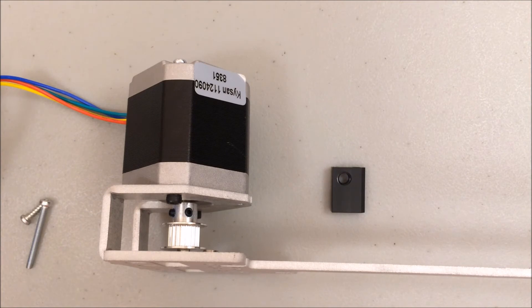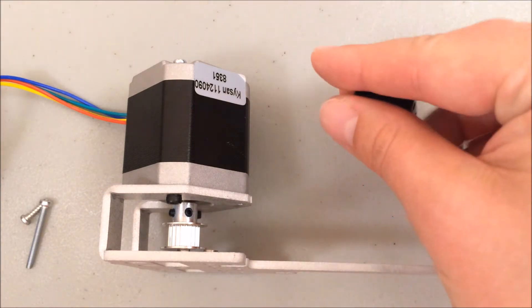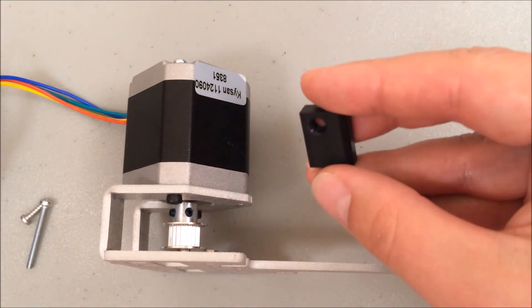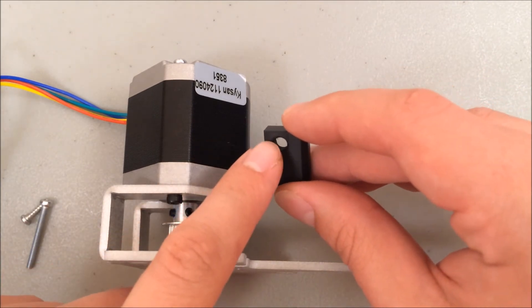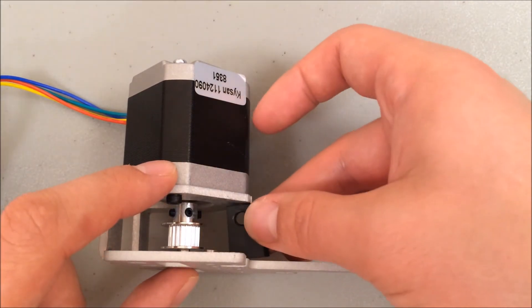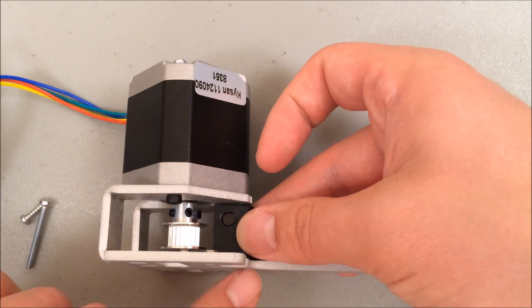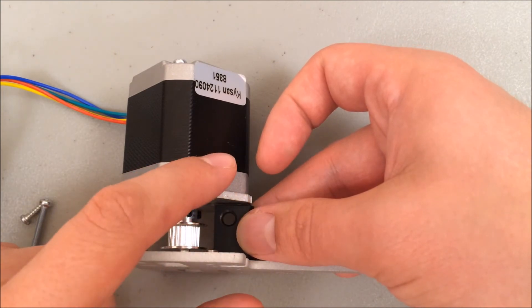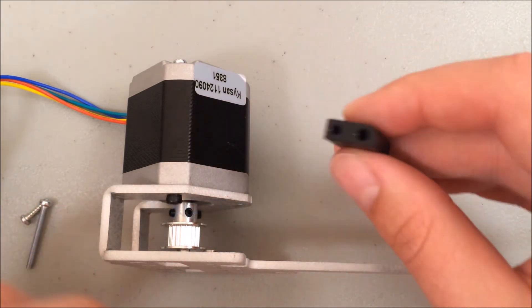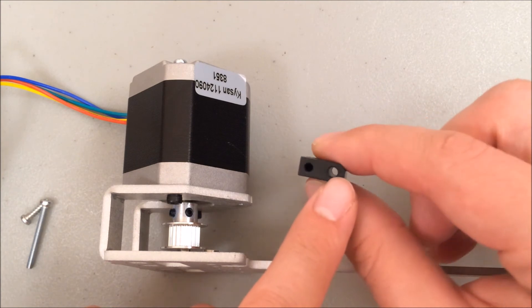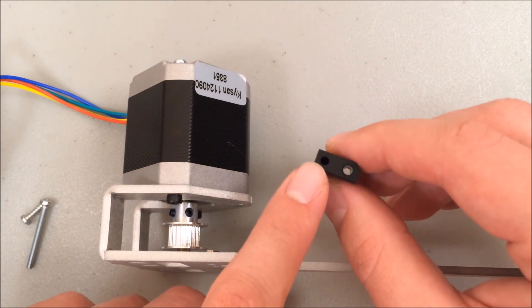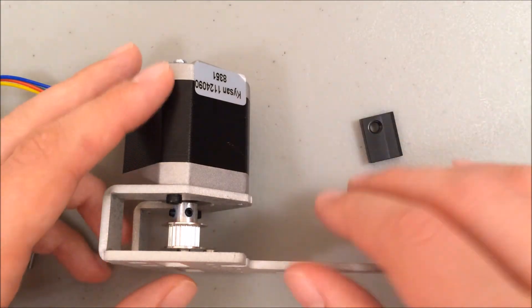The last screw for the x-axis motor passes through this little block of Delrin here. This is considered the Acme nut because the threaded rod goes through this opening here. This slides in right here and we're going to feed a screw from the outside of this plate through this piece into the motor and that opening is right there. This other spot is for a plastite screw.